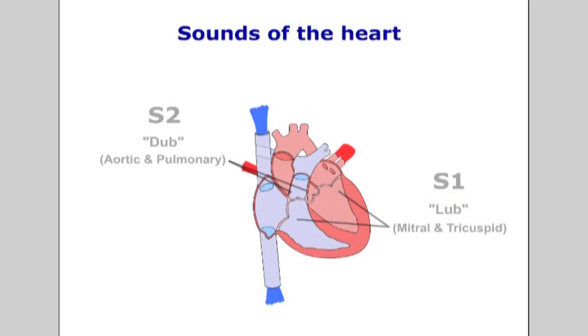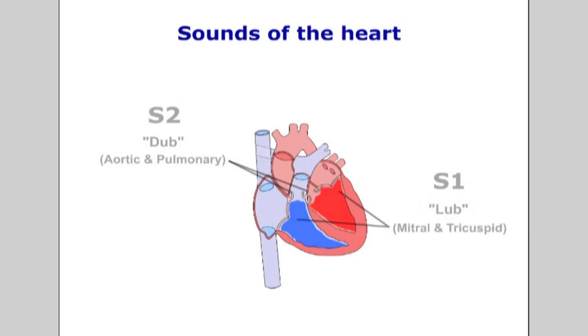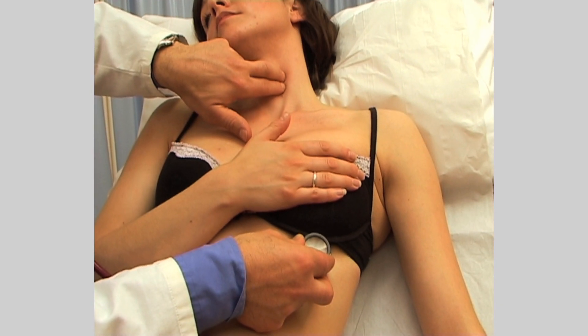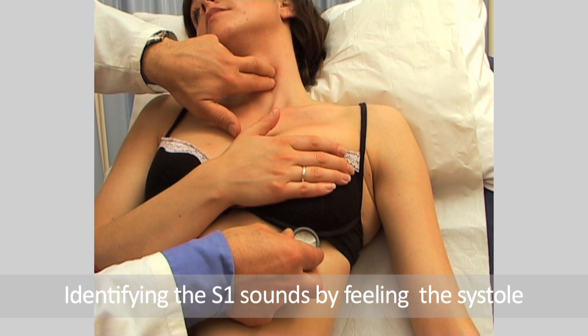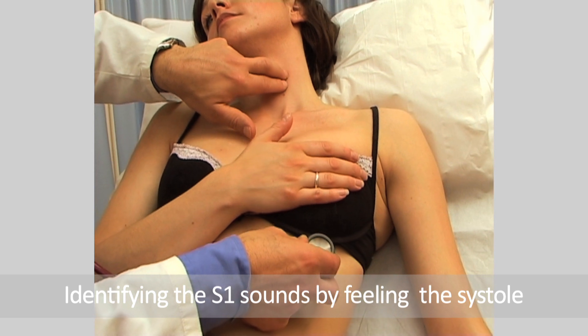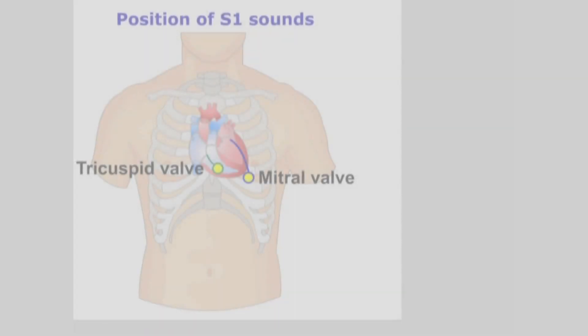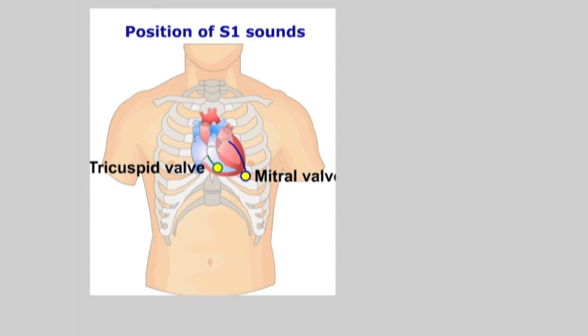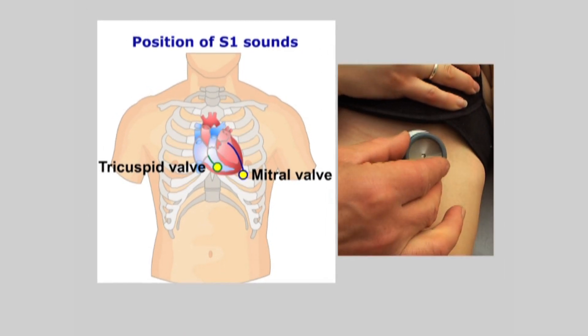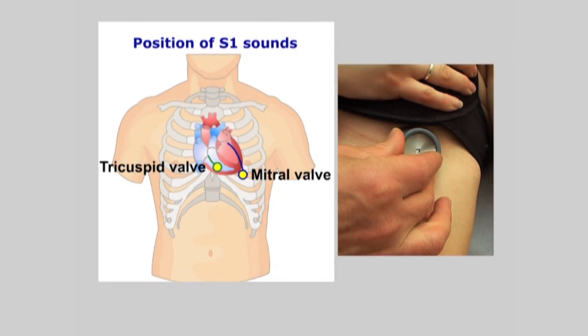Students may wish to feel for the carotid pulse whilst at the same time auscultating, to help identify the two sounds. When you feel the systole of the carotid pulse, this should coincide with the S1 sound. For the best S1 sound, you need to have your stethoscope over the apex of the heart, because this is the area where the atrioventricular valves project their sound as they shut.